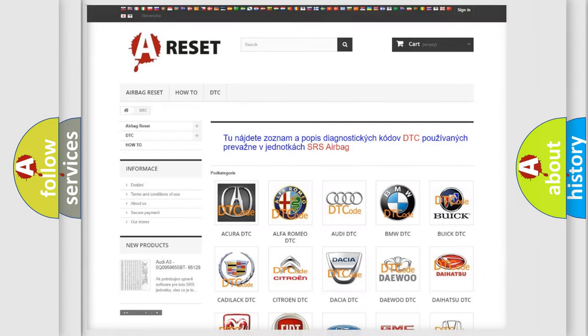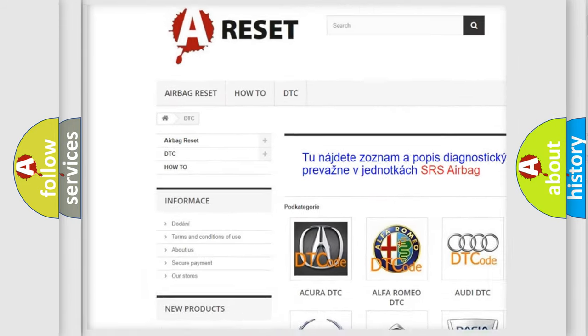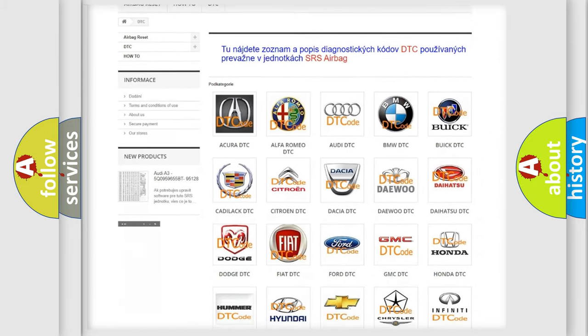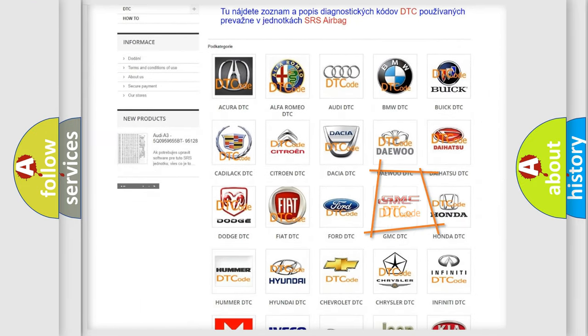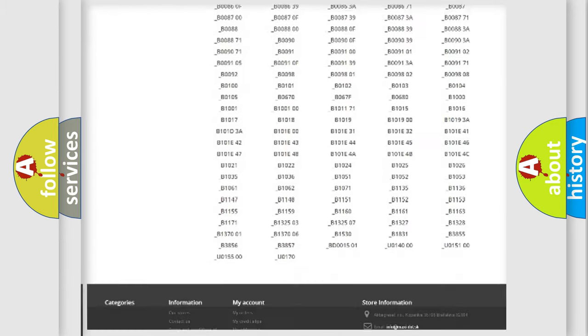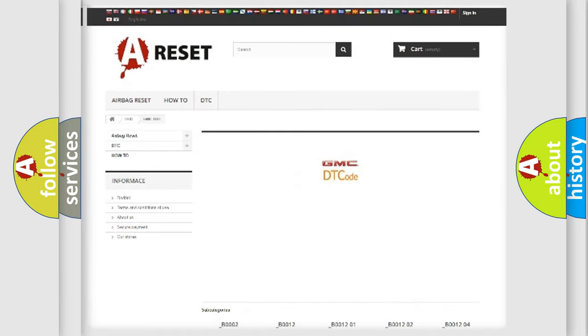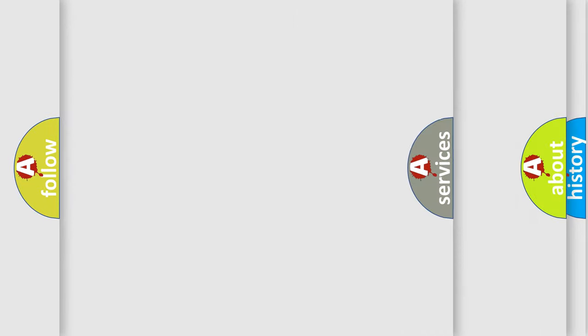Our website airbagreset.sk produces useful videos for you. You do not have to go through the OBD2 protocol anymore to know how to troubleshoot any car breakdown. You will find all the diagnostic codes that can be diagnosed in GMC vehicles, and also many other useful things.